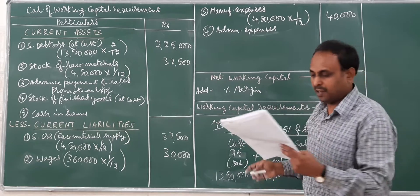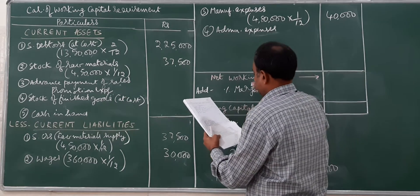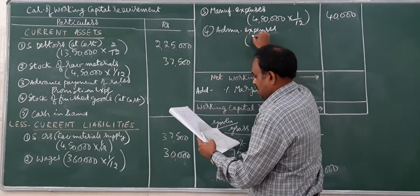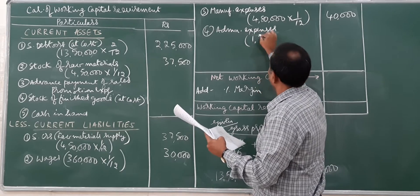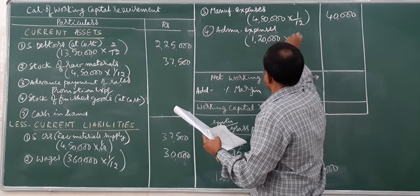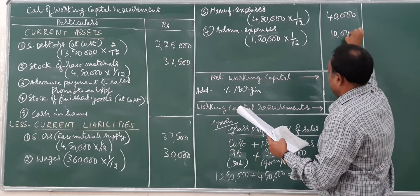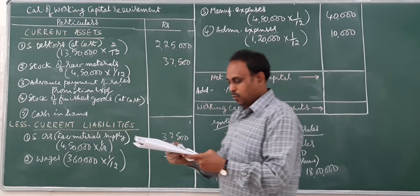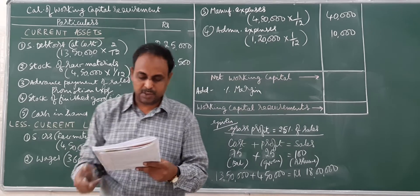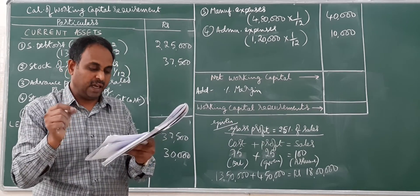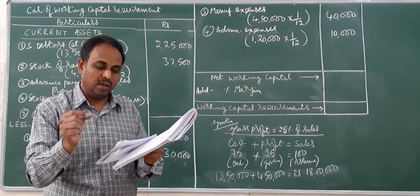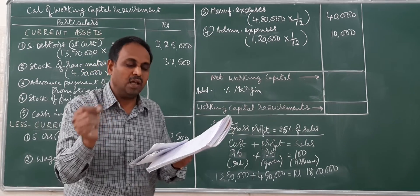Administration expenses with 1 month lag: 1 lakh 20,000 into 1 by 12 equals 10,000. Next is sales promotion expenses. Please read carefully - it is very clearly given as paid quarterly in advance.